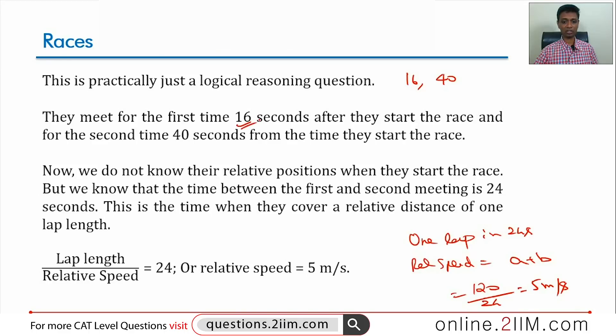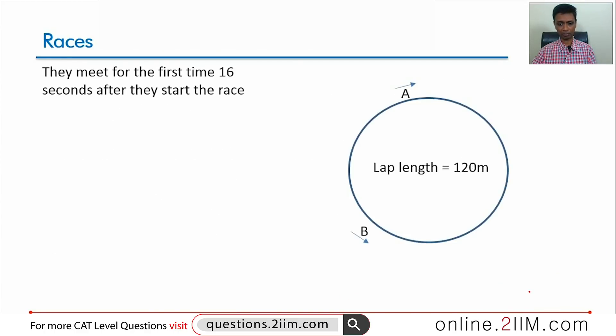In the first 16 seconds, together they would have traveled 16 into 5 equals 80 meters. Originally, they were 80 meters apart. Let's draw this as a diagram. They start at one point here, one point here. They move in opposite directions and this distance is 80 meters because it takes them 16 seconds to do this distance. The remaining distance is 40 meters.